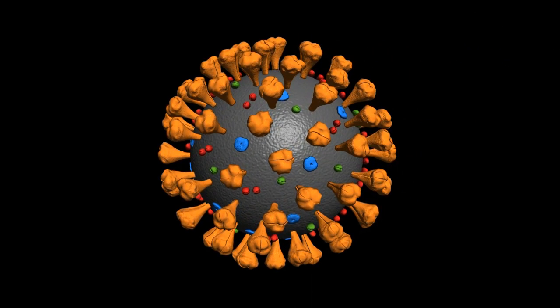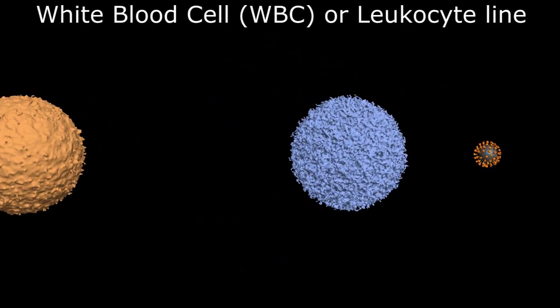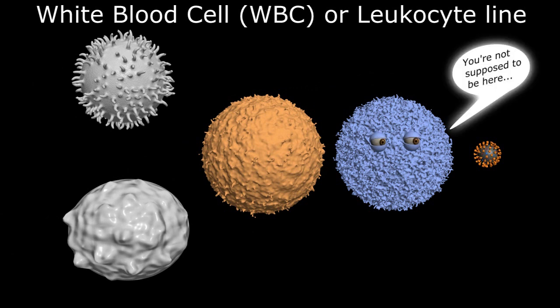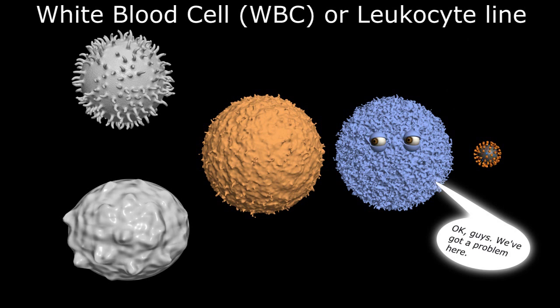When our bodies are exposed to a pathogen, our immune systems, predominantly through various members of the white blood cell or leukocyte line, defend us against that invasion by recognizing the virus or bacterium as foreign and mounting a coordinated attack against the same.